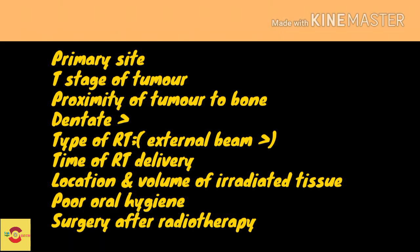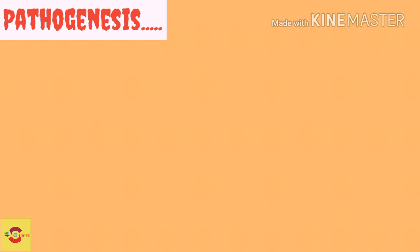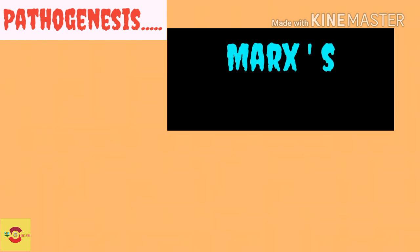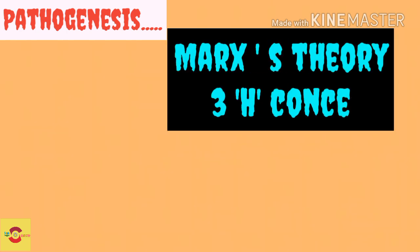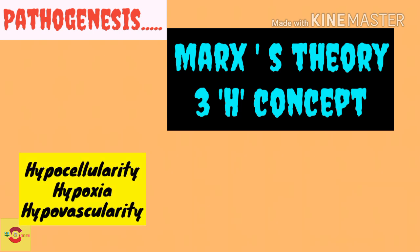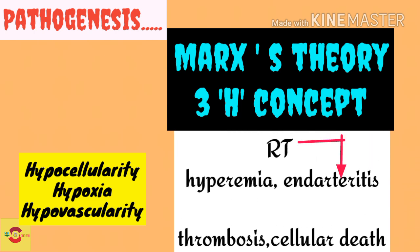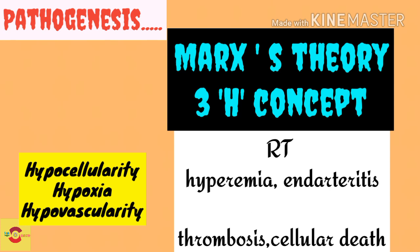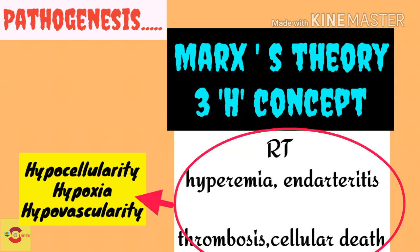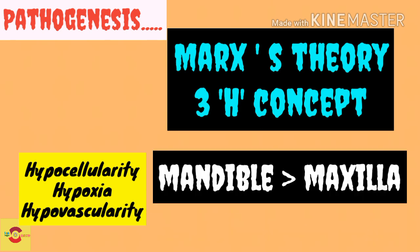Moving on to the pathogenesis of ORN: Marx in 1983 postulated the 3-H concept, which is hypocellularity, hypoxia, and hypovascularity. To summarize: following radiotherapy, hyperemia, inflammation, and endarteritis occur, which eventually results in thrombosis, cellular death, and progressive hypovascularity. The irradiated block becomes less cellular as a result, followed by hypovascularity and hypoxic conditions.